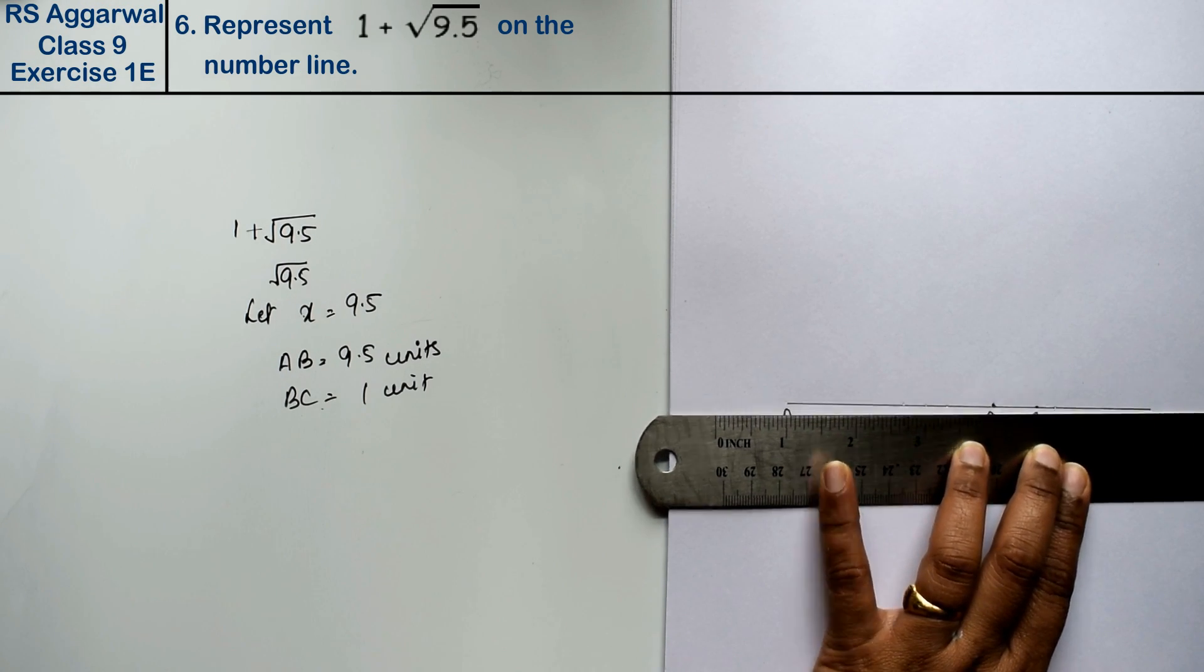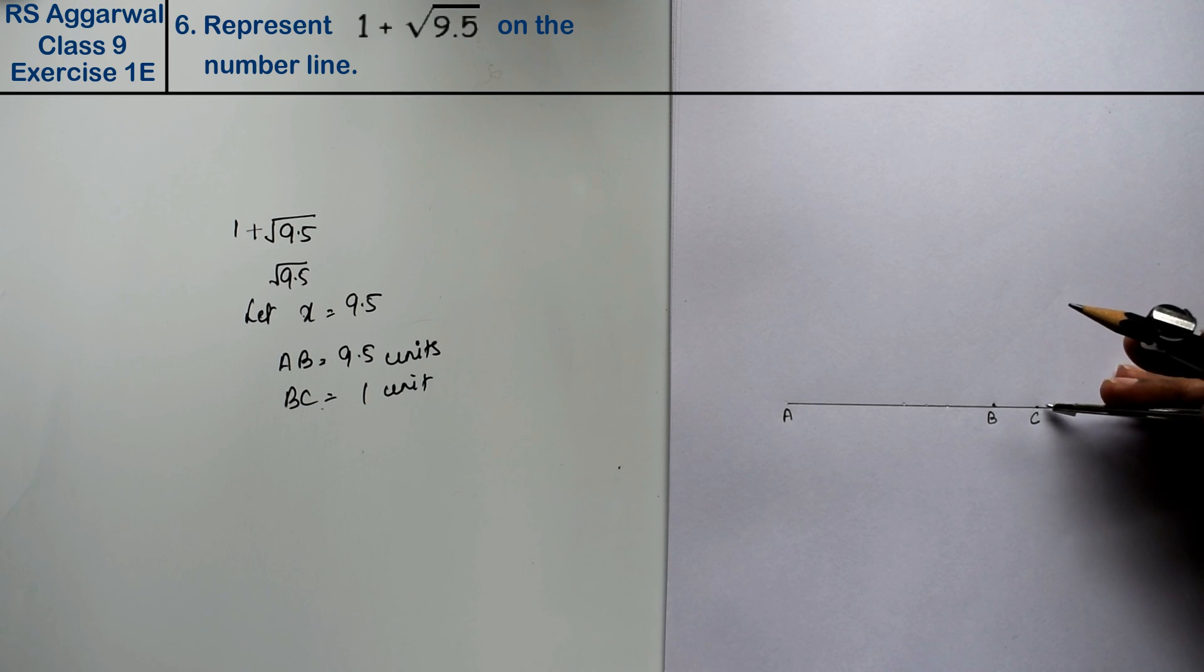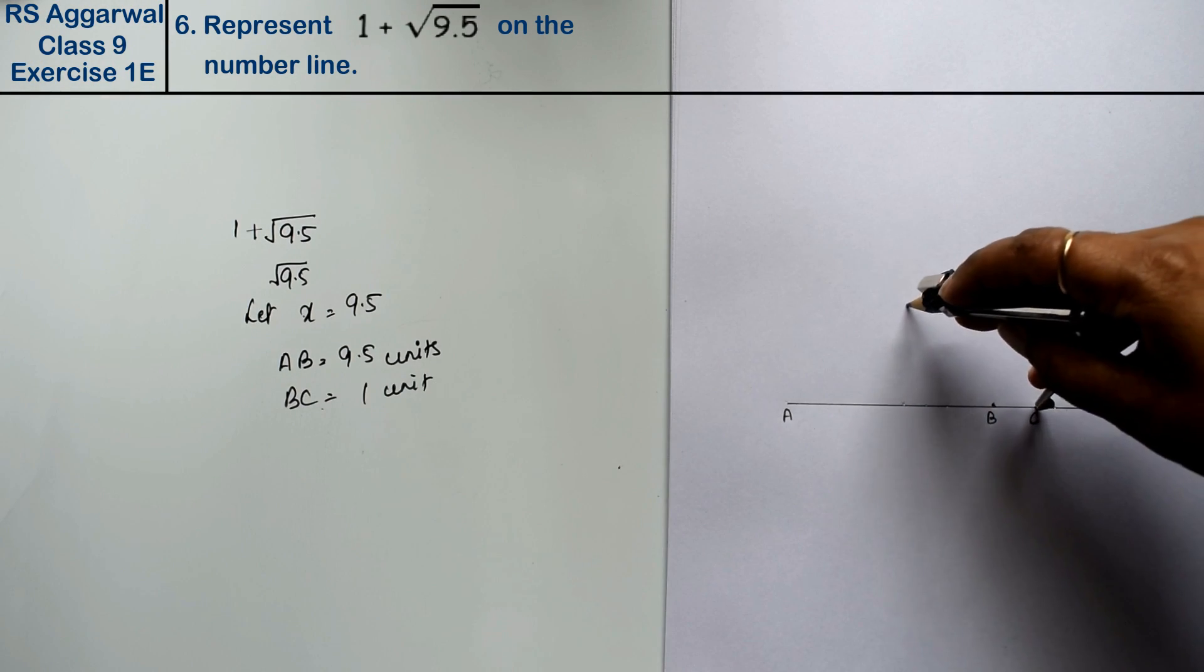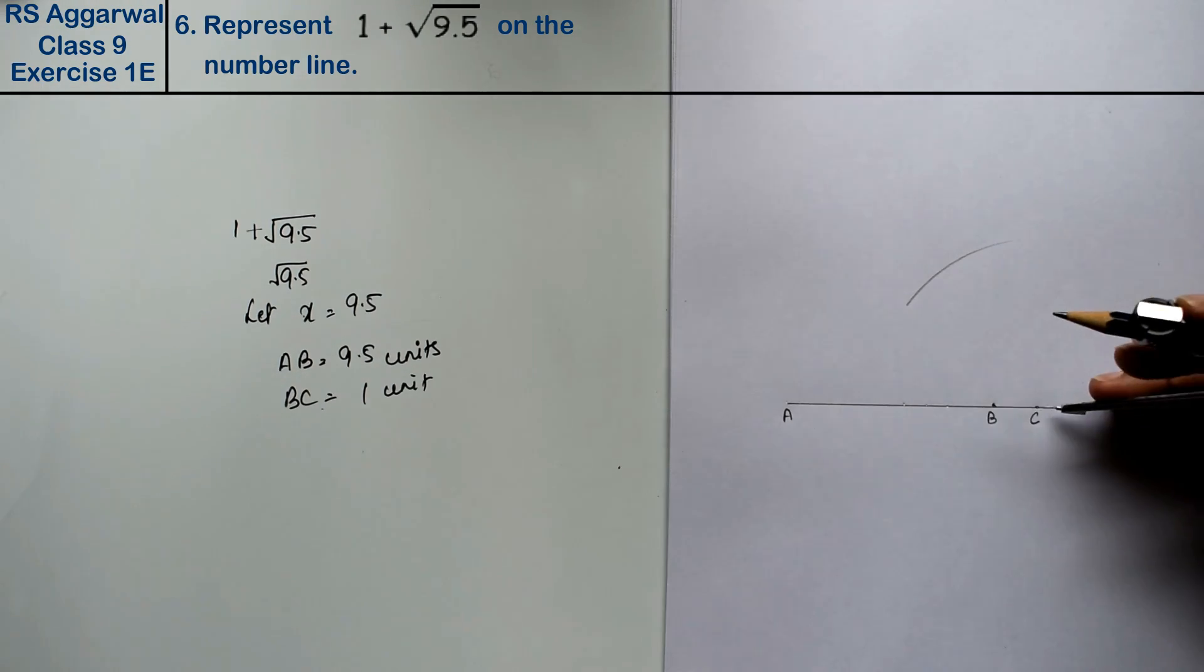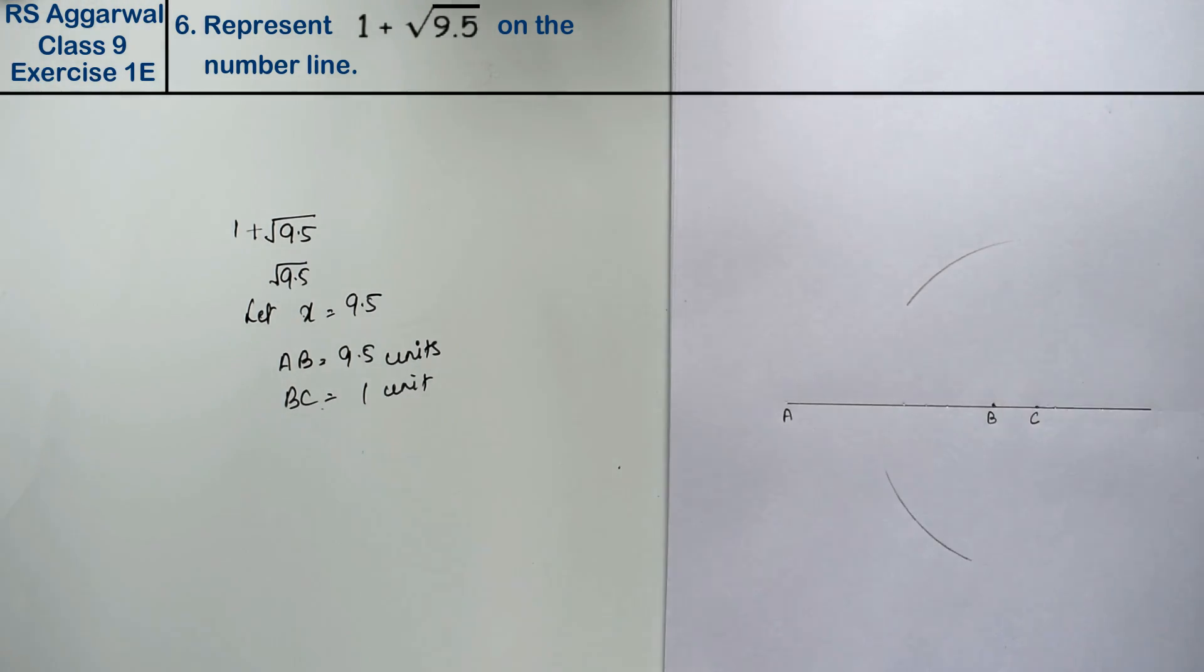Now we will make a perpendicular bisector of A and C. The perpendicular bisector of AC - take half, draw one arc here and one arc here from the same point.